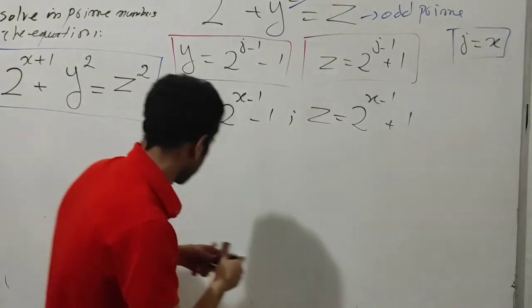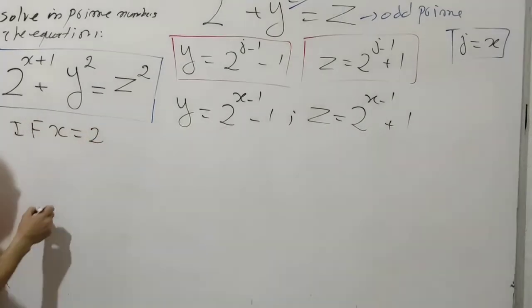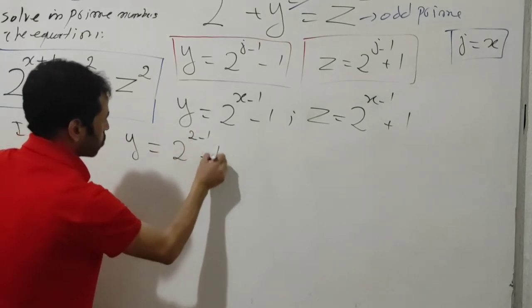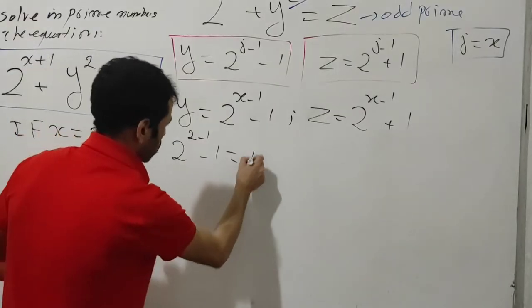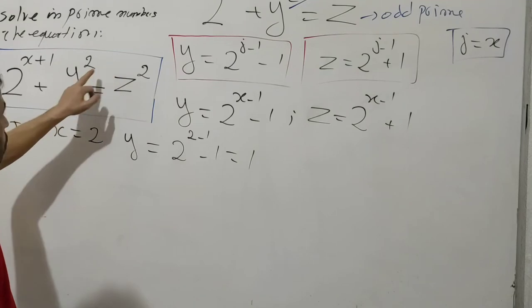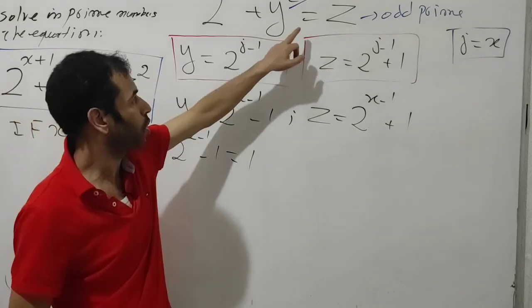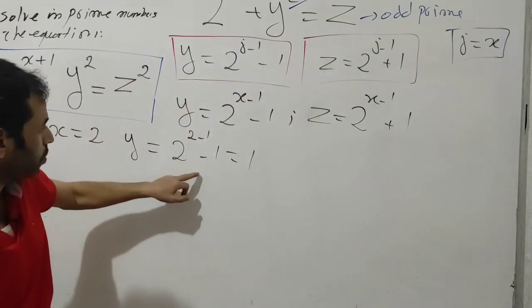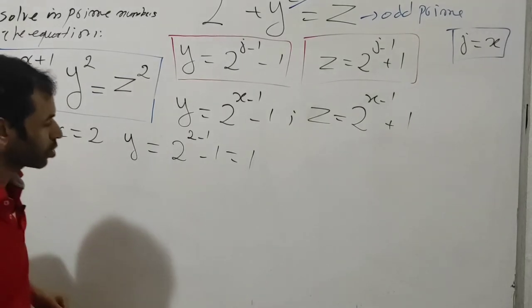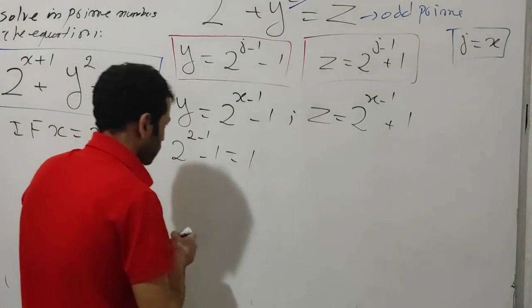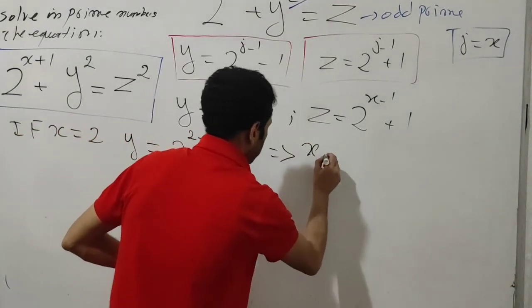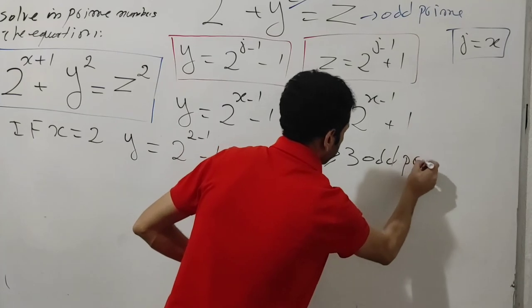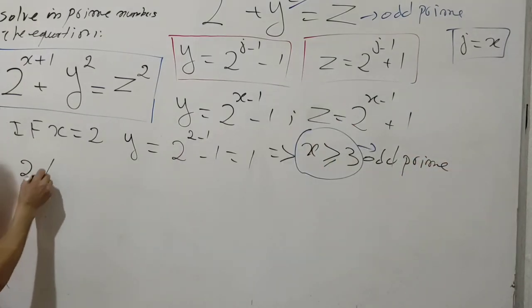Since y = 1 is not a prime, x = 2 is ruled out. Therefore x must be an odd prime, which means 2 does not divide x.